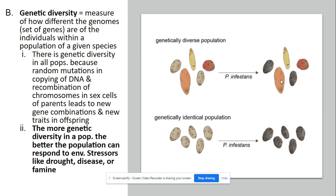Genetic diversity is specifically looking at the variety of genes found in a population of a given species. It is the measurement of how different genomes or sets of genes are found in individuals within a population. There is genetic diversity in all populations due to random mutations when DNA is copied or recombined, especially during the formation of sex cells and chromosomes. The more genetic diversity in a population, the better that population can respond to stressors such as drought, disease, or famine.